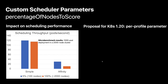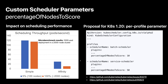To address that, we propose a per-profile parameter idea. The current 'percentage of nodes to score' is a global parameter. What we propose is to have per-profile parameters, so we can assign different percentages of nodes to score to different scheduling profiles. Different workloads or tenants can use different scheduling profiles to better meet their scheduling performance and quality requirements.